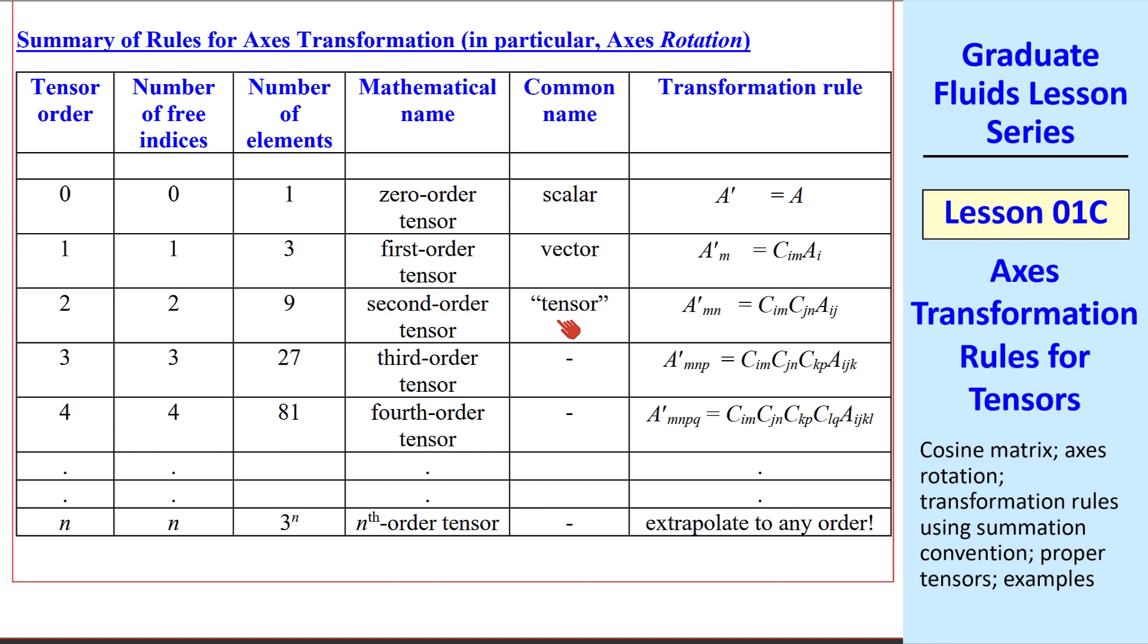A second-order tensor, usually just called a tensor, has nine elements, two free indices. And we extend this by having two free indices here and two cosine matrices. We can continue with third, fourth, or nth order tensor. The number of free indices here is equal to the order of the tensor, as is the number of cosine matrices that are strung together. You can see the pattern in the way we have defined the indices of these cosine matrices.